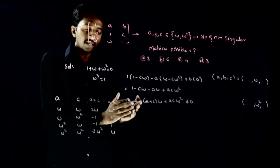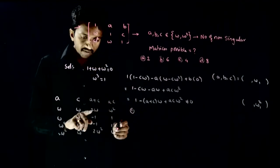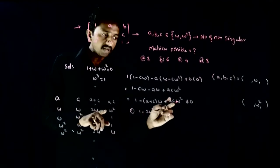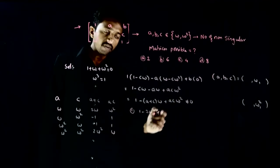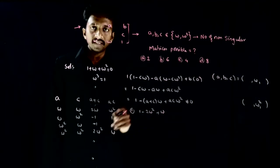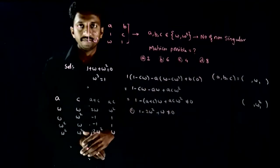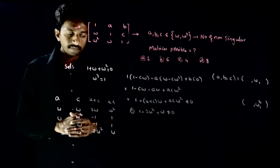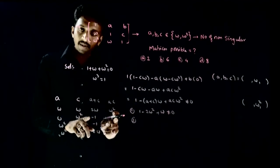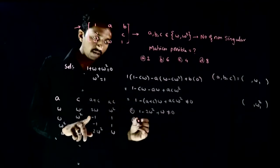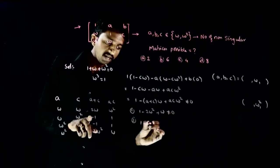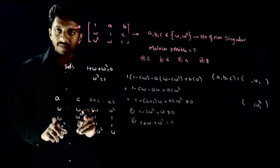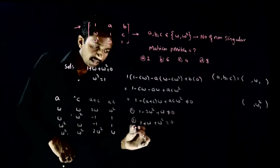Substituting case 1 (a+c = 2ω, ac = ω²): 1 − 2ω·ω + ω²·ω² = 1 − 2ω² + ω, which equals −3ω², not equal to 0. Substituting case 2 (a+c = −1, ac = 1): 1 − (−1)·ω + 1·ω² = 1 + ω + ω² = 0. So this case gives determinant = 0, meaning a = ω, c = ω² produces a singular matrix.